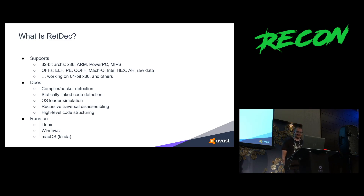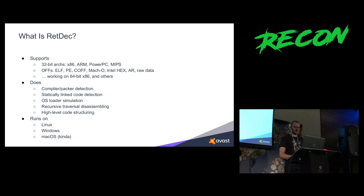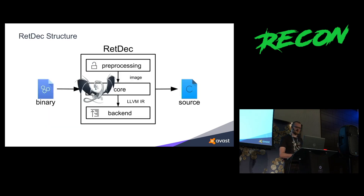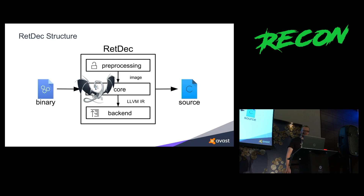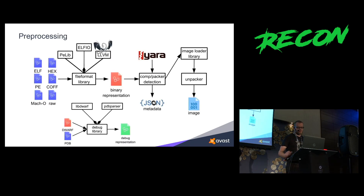As you will see, we do a lot of stuff that you would expect, like compiler detection, static linked code detection, and stuff like that. The compiler should run on all major operating systems. You get a binary and what you want to get out of this process is some kind of source code. We do just C — decompilation to C. The decompiler can be split into three logical parts: preprocessing, the core part, and the backend that actually generates the C. Now I will let my colleague Marek tell you about preprocessing.